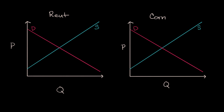What we're going to talk about in this video is the effect of price controls on changing how the surplus — the total surplus — is reallocated between consumers and producers. We already touched on this in other videos, the video on rent control and the video on minimum wages. This is to make sure that we are taking away some of the big ideas.